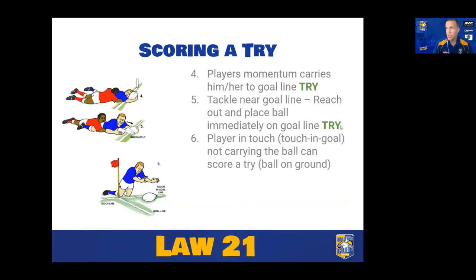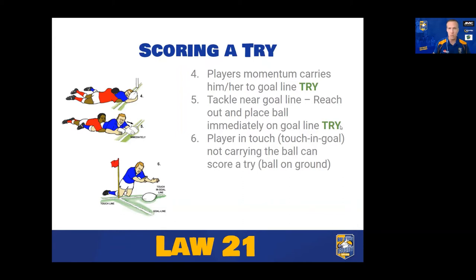A player in touch or touching goal who is not carrying the ball can also score a try — which is slightly confusing but it is an actual rule. If you're outside the field of play and the ball is on the ground in the in-goal, you can reach in while still out and touch the ball down. This is similar to the touch law: if you're outside the field of play in touch, and the ball hasn't crossed that plane, you can press the ball down straight away in an instant motion and the try is scored.